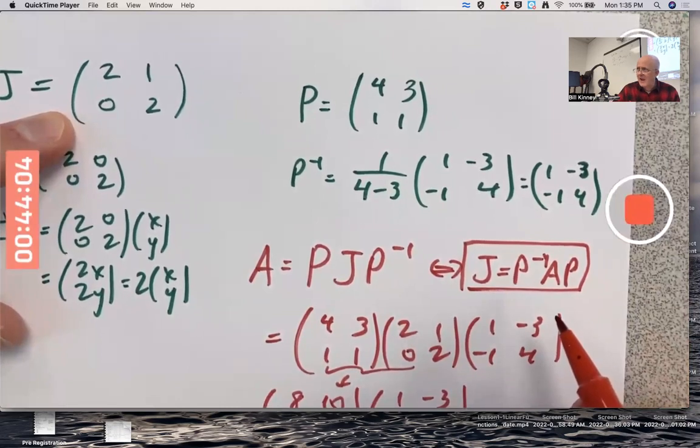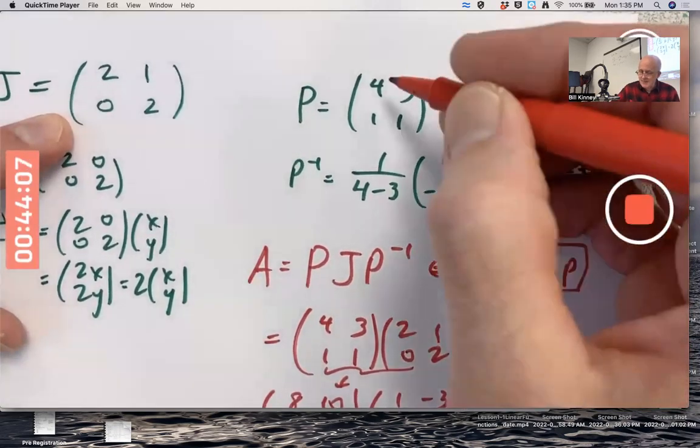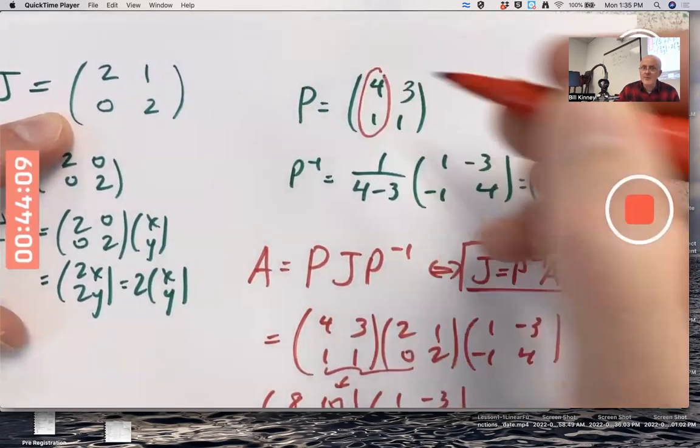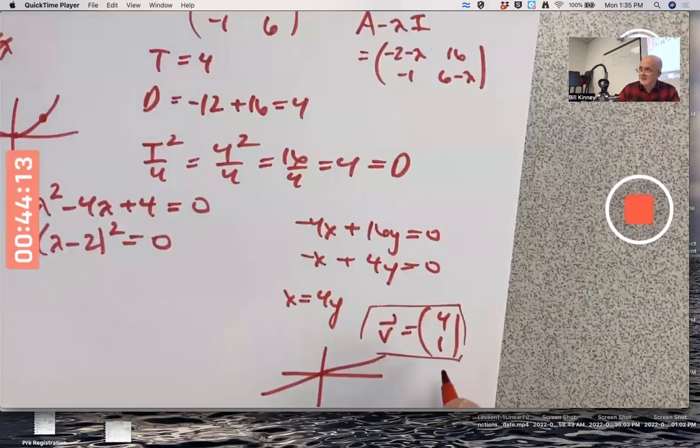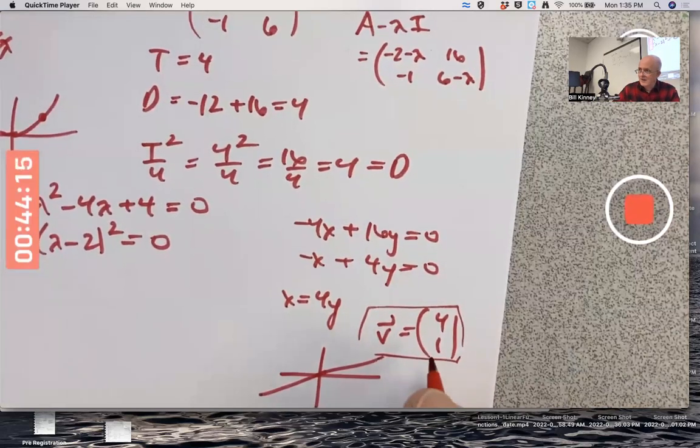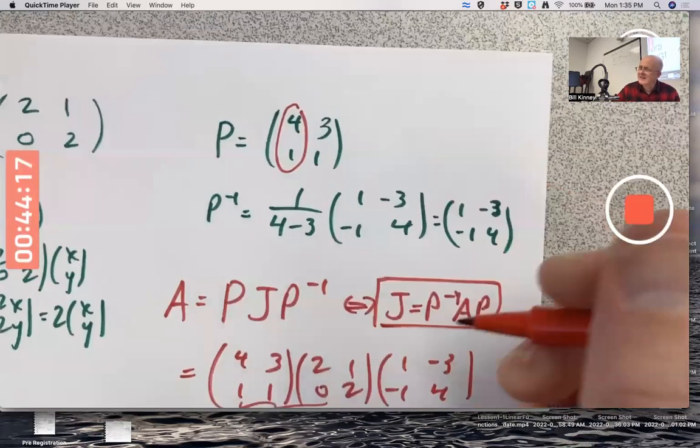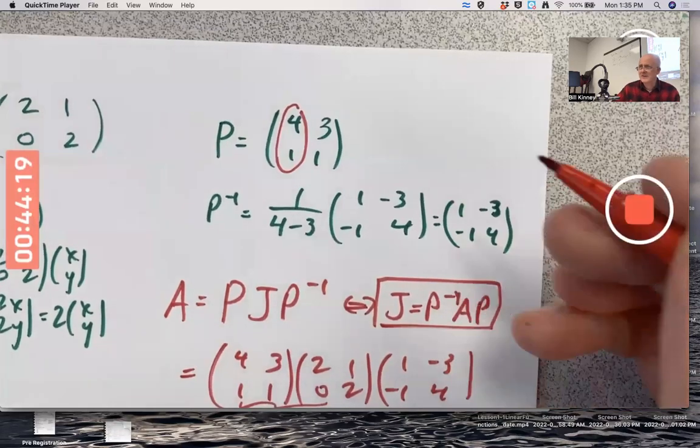Not in the typical way. Do notice this P that I happen to pick. Its first column four one is an eigenvector, but its second column's not. So how would you figure out the second column?